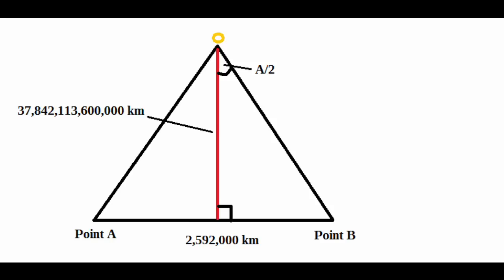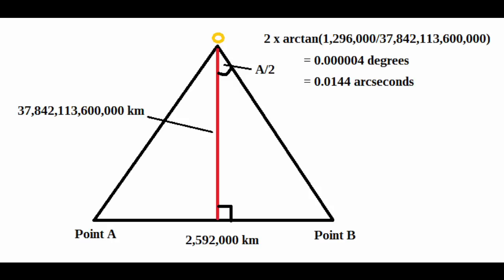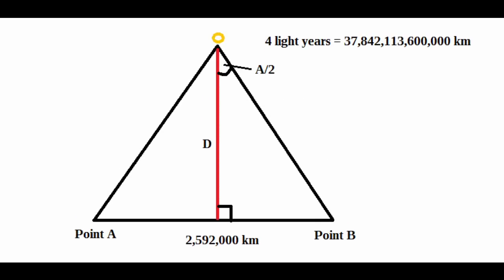So let's plug in the numbers. 2,592,000 km divided by 2 is 1,296,000 km. Divide this by 37,842,113,600,000, find the arctangent of the solution of that, and multiply this by 2, and we find that the angular difference of the star's apparent position in the sky between our start point and end point to be roughly 0.0000004 degrees, or 0.0144 arcseconds. So I'm intrigued as to why this particular flat earth proponent believes they should be able to observe a motion blur with an angular size less than 0.00005 degrees, and we're only talking about a star that's just 4 light years away.